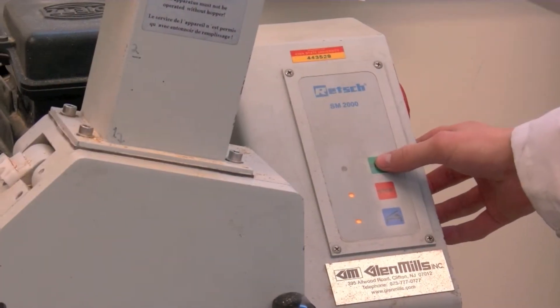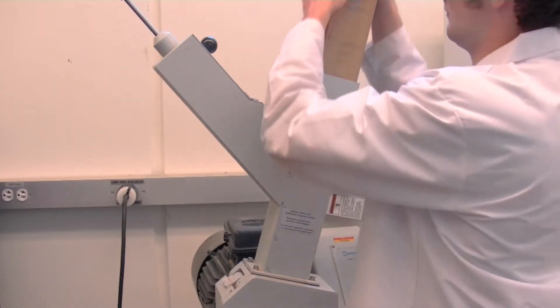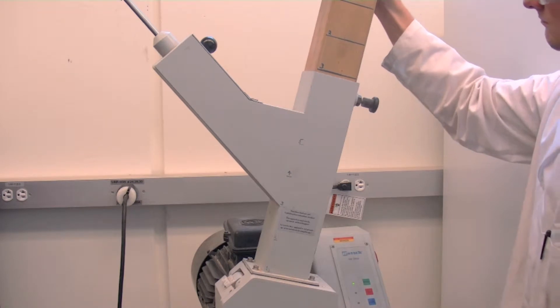Now press the green start button to begin running the knife mill. Lift the fill plunger to allow biomass to enter the knife mill encasing.